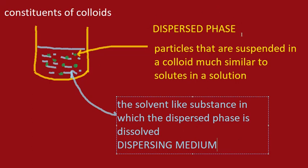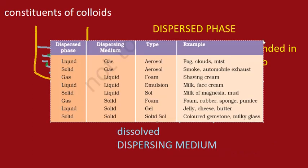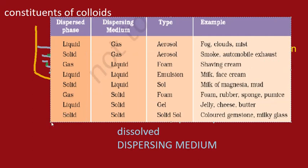So in this case, the particles of soil are the dispersed phase and water is the dispersing medium. Depending upon the type of dispersed phase or the state of the dispersing medium — whether solid, liquid, or gas — colloids are categorized into several groups. We can take a look at this table, which is also in your book.